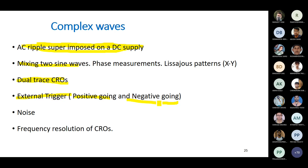Sometimes noise is present depending on the oscilloscope's bandwidth. If the oscilloscope has a good bandwidth, the noise level also changes. Frequency resolution of the CRO is also important — it means how accurately you can resolve the maximum frequency. With more bandwidth, you get better frequency resolution and better results.